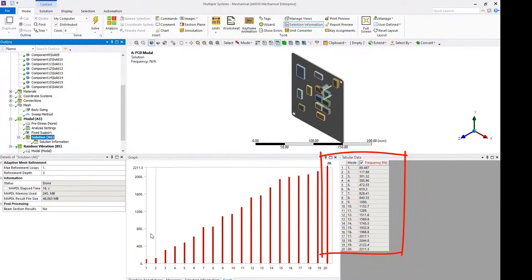Once completed, note from the modal results that the natural frequencies of the PCB range from 90 to 2200Hz for the first 20 modes.